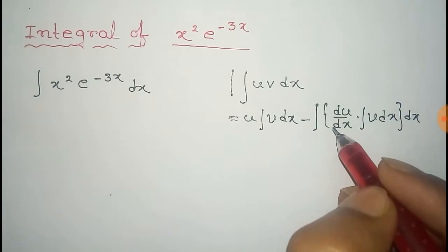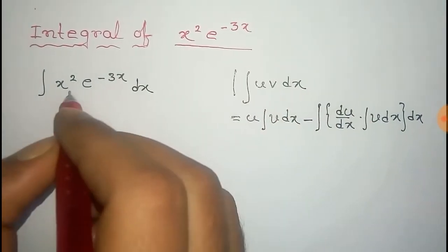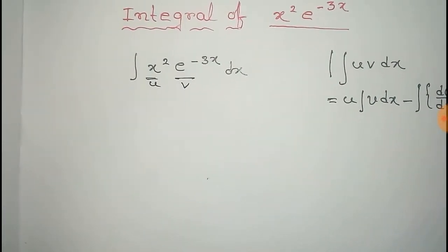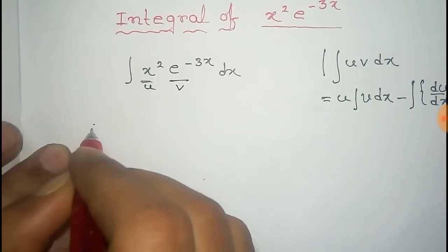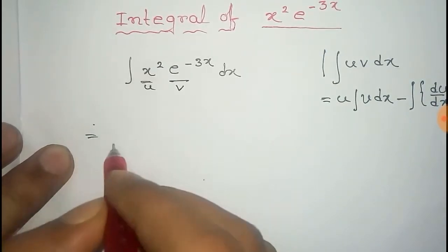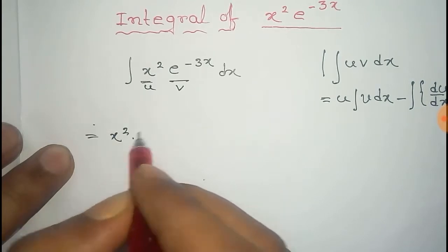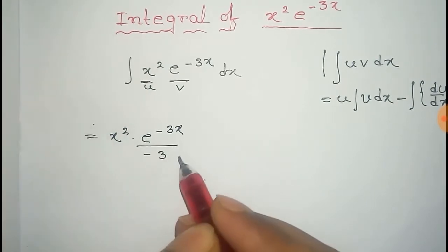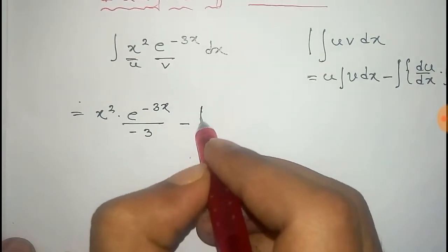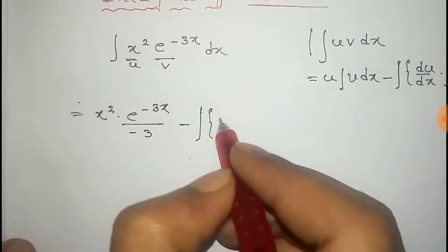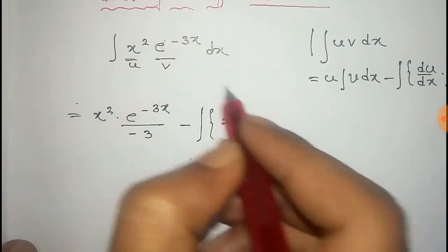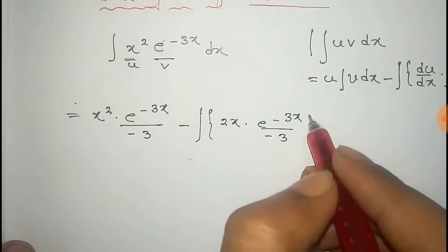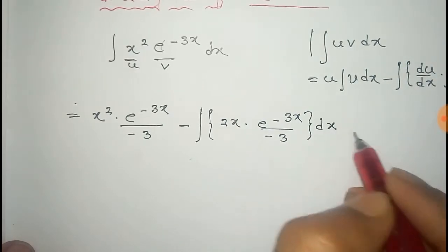We use this formula and take x squared as u and e to the power minus 3x as v. So the integral becomes: x squared into the integral of e to the power minus 3x, which equals e to the power minus 3x by minus 3, minus the total integral of the derivative of x squared, which is 2x, into e to the power minus 3x by minus 3, into dx, plus constant c1.